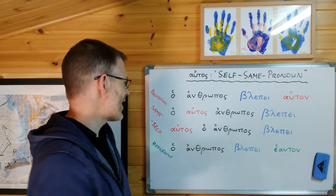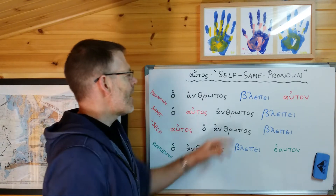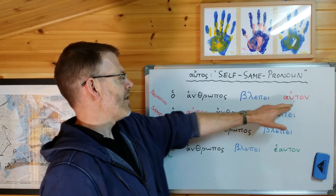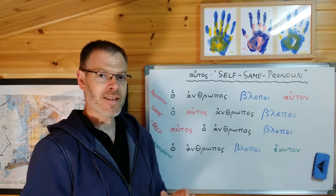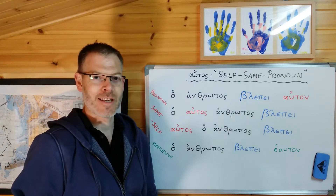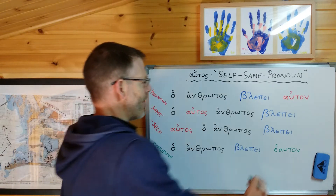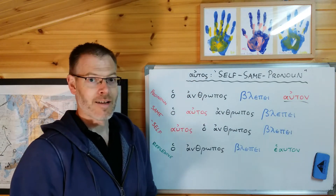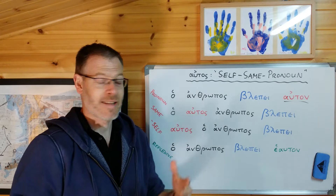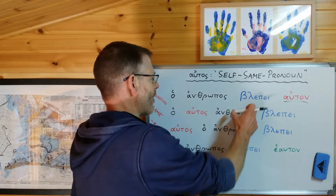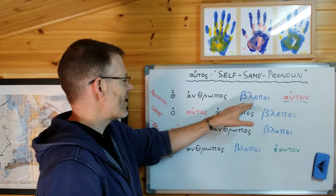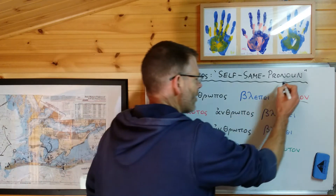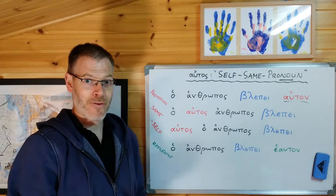First let's look at this sentence: 'hot anthropos blepe auton' — the man sees him. This is the use of autos that you've already encountered, where the pronoun in the accusative singular is used just as a pronoun — in this case it's the object of the verb blepe. So the man, hot anthropos, sees him. Pronoun. That's the use of autos you're already familiar with.